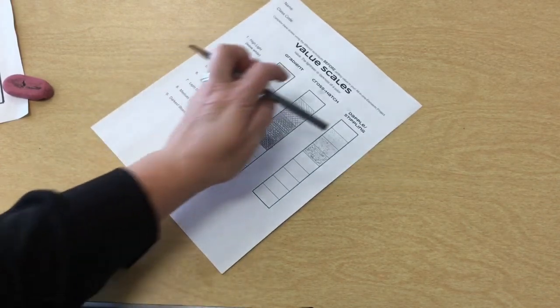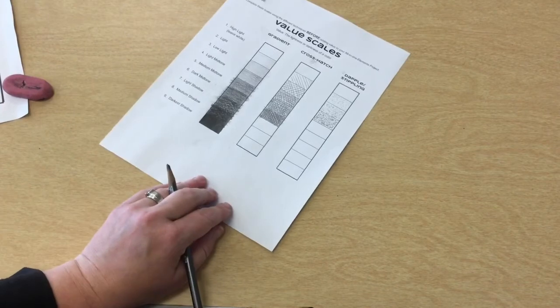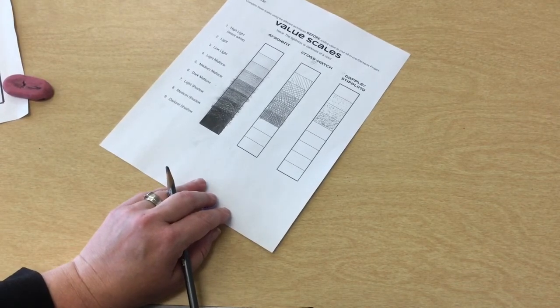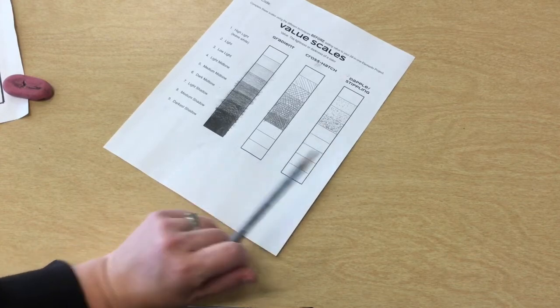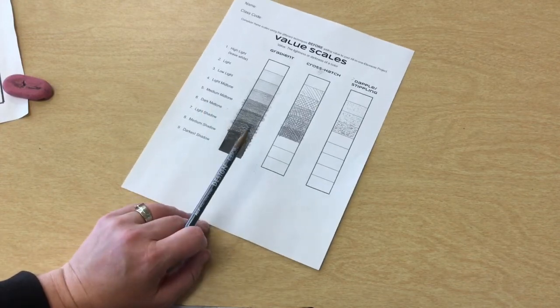All right. So I have three. I'm not quite finished here, but I think I feel like I have a good enough idea of which one I like. I would either go with the crosshatch or this one. I'm definitely not going to do the dappling because it takes too long.